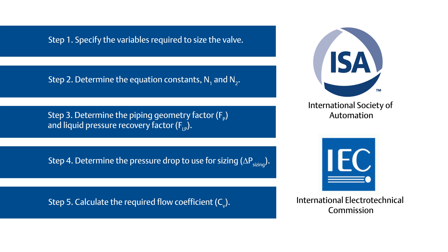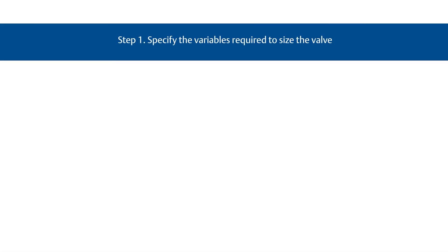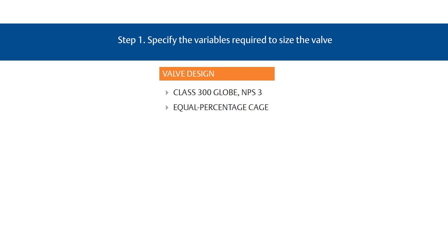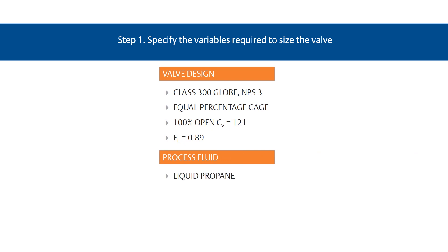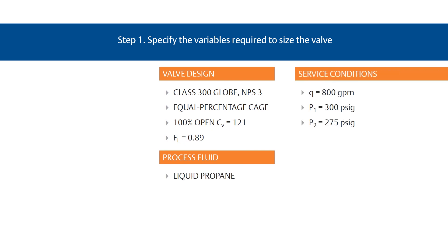Let's go through how to verify the appropriate valve size. Step 1: Specify the variables required to size the valve. The desired valve design is a Class 300 globe valve with an assumed size of 3 inches and an equal percentage cage. We'll assume standard concentric reducers will be used to install the valve into the line. This valve has a 100% open flow coefficient or CV of 121, with a liquid pressure recovery factor or F sub L of 0.89. The process fluid is liquid propane and the service conditions are shown. We'll keep these conditions on screen throughout for reference.